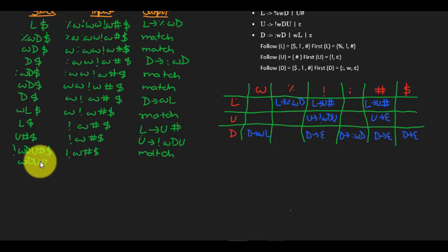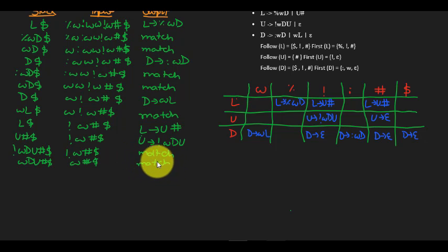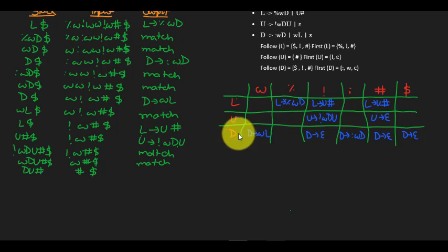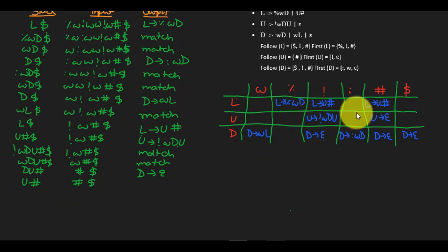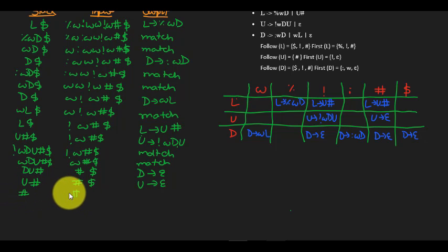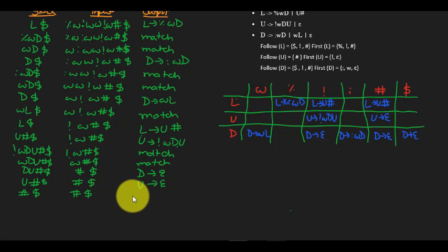So we are left with WD U hash dollar, W hash dollar. W and W is also a match. Excuse my handwriting. And we get DU hash and hash dollar. D on hash — we use the rule D goes to epsilon, which means we pop off D but push nothing in. Epsilon means nothing. So we're left with U hash and hash dollar. U on hash — we use the rule U goes to epsilon, so we pop U off and we're left with hash, hash dollar. Hash and hash is a match. So the input string is done.